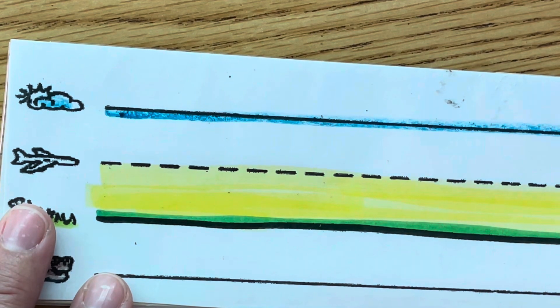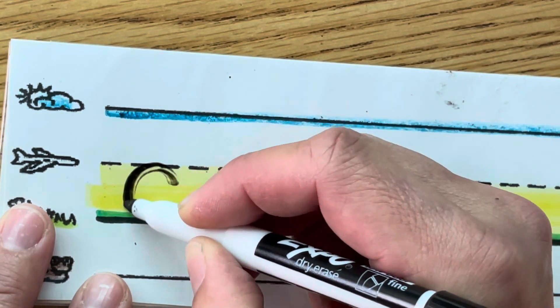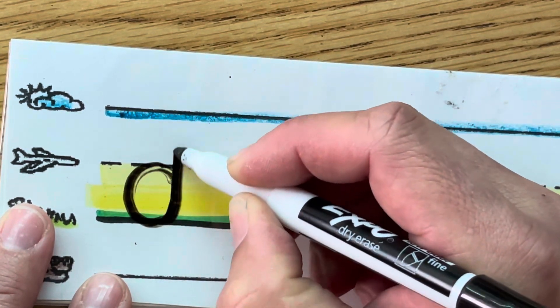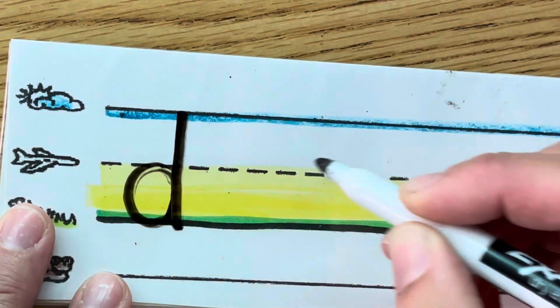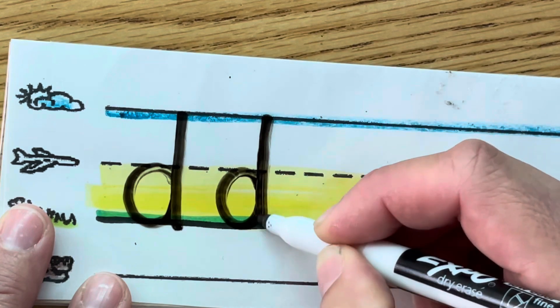Now we're going to make the letter D. The letter D. D starts with a magic C, all the way to the top, down. Magic C, all the way to the top, down.